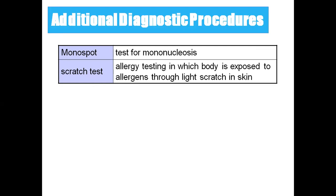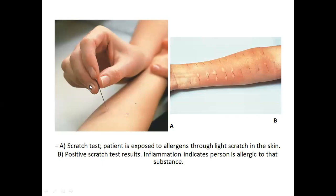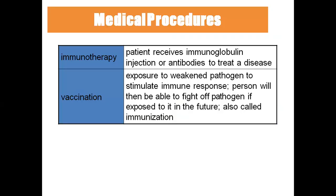The scratch test is an allergy test to know whether a substance is causing allergy in a patient. They put the allergen on the skin with a needle and observe whether the person gets inflammation. If inflammation occurs, the person is allergic to that substance. For example, if the person is allergic to pollen grain, the needle is inserted with pollen grain — a positive result shows inflammation.